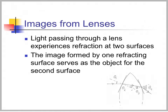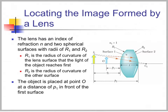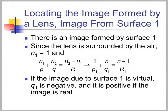The image formed by one refracting surface acts as the object for the second surface. A lens has an index of refraction N and two spherical surfaces with radii R1 and R2. R1 is the radius of curvature of the lens surface that the light from the object reaches first, and R2 is the radius of curvature of the other surface. The object is placed at point O at a distance P1 in front of the first surface. Since the lens is surrounded by air, N1 equals 1, and we get 1 over P1 plus N over Q1 equals N minus 1 over R1.